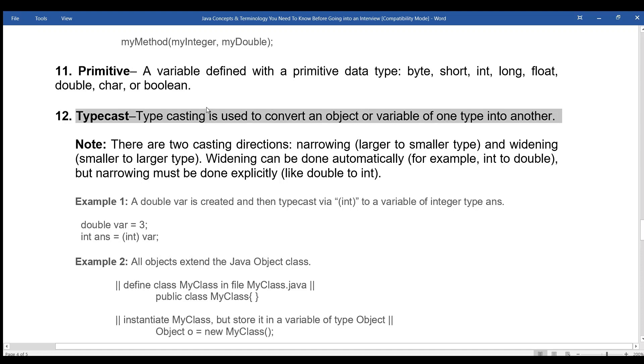Typecast: Typecasting is used to convert an object or variable of one type into another. Note: There are two casting directions: narrowing (larger to smaller type) and widening (smaller to larger type). Widening can be done automatically, for example int to double, but narrowing must be done explicitly, like double to int.